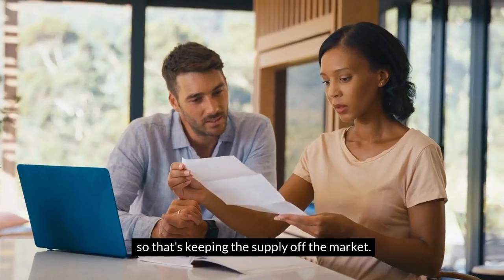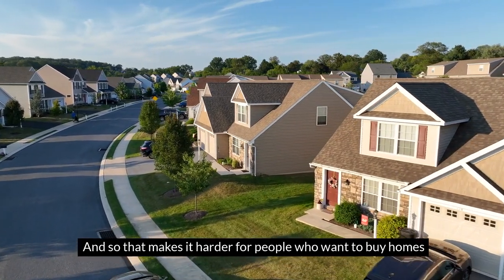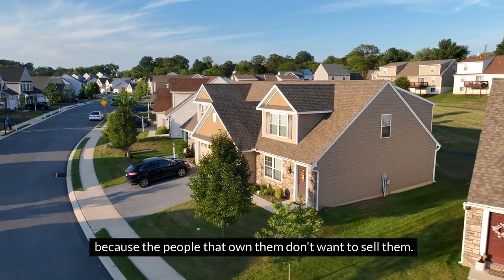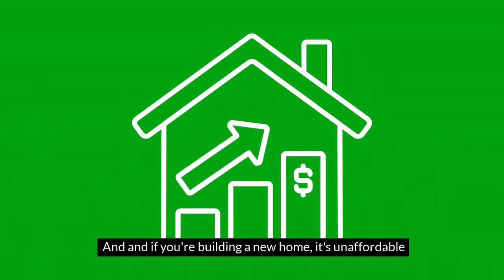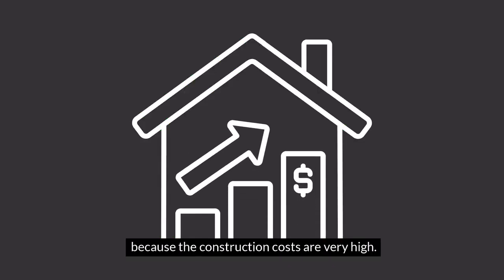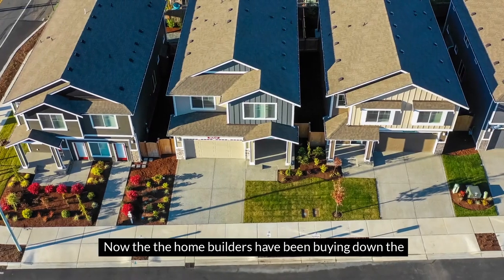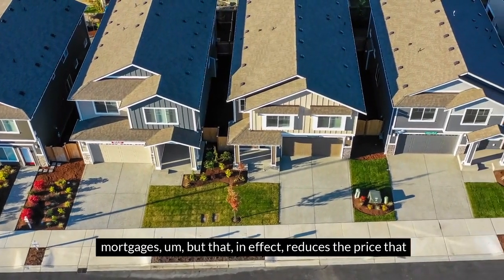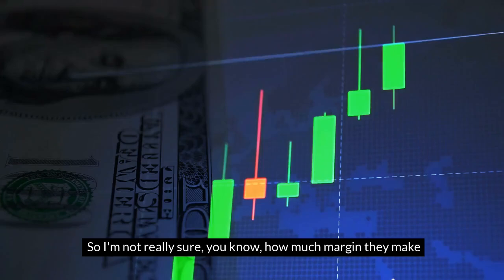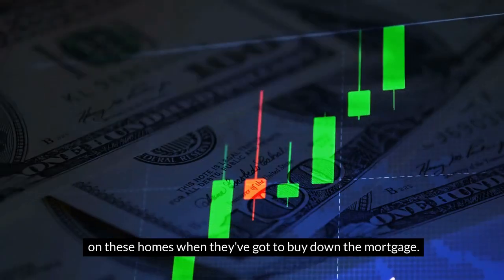That's keeping the supply off the market, and so that makes it harder for people who want to buy homes because the people that own them don't want to sell them. If you're building a new home, it's unaffordable because the construction costs are very high. Once it's constructed, you got to borrow money. Now the home builders have been buying down the mortgages, but that in effect reduces the price that they're getting for their homes. So I'm not really sure how much margin they make on these homes when they've got to buy down the mortgage.